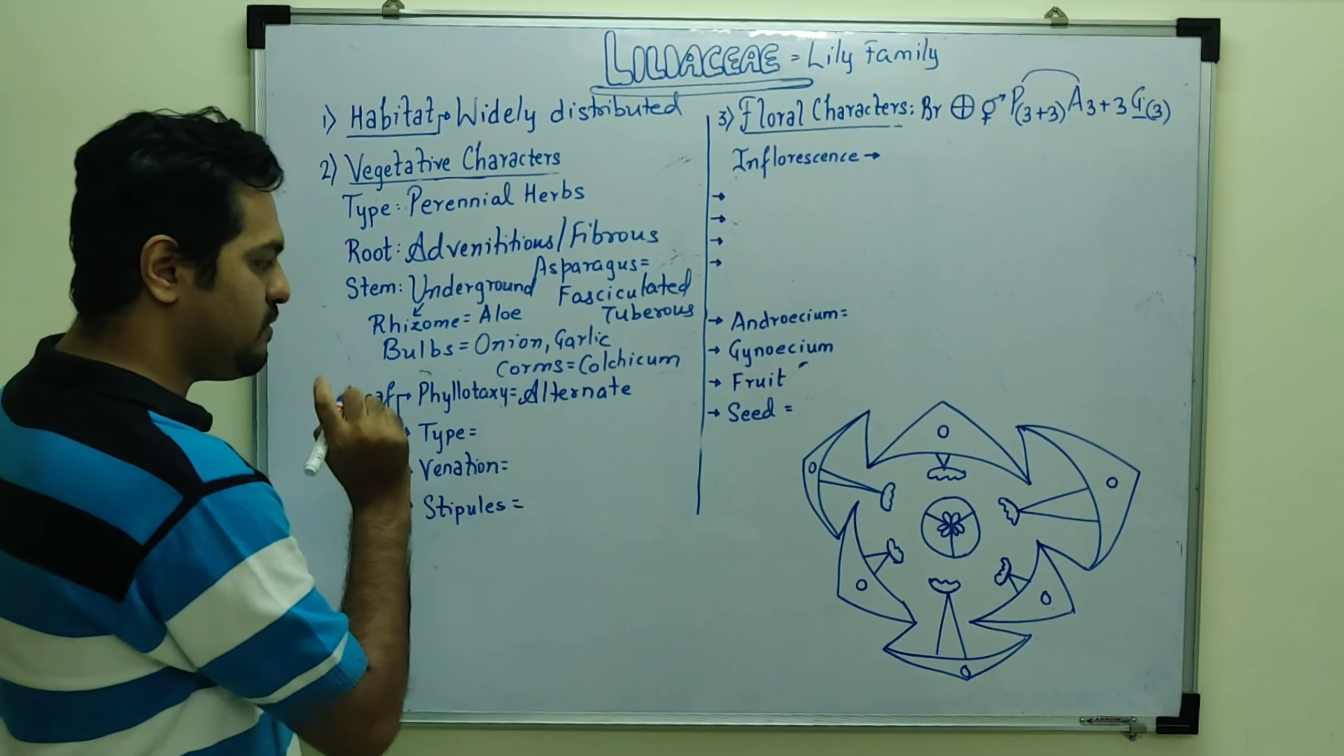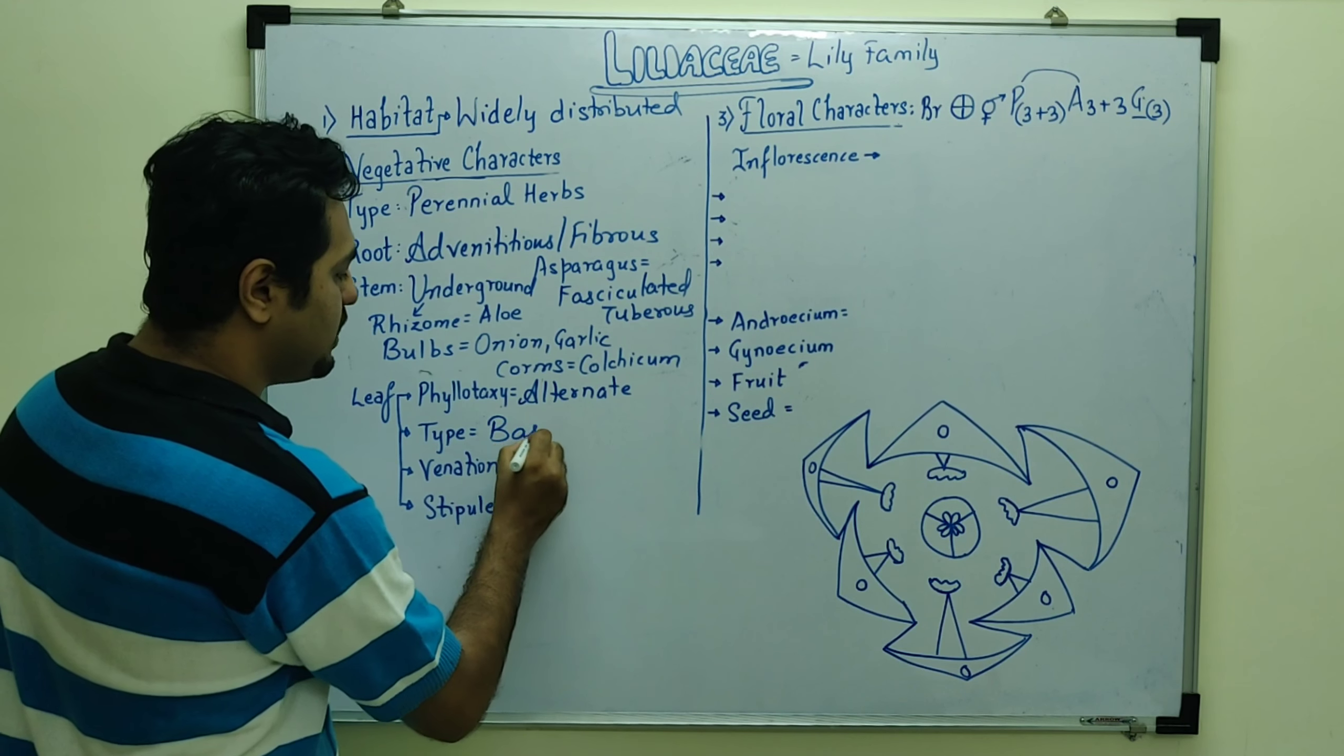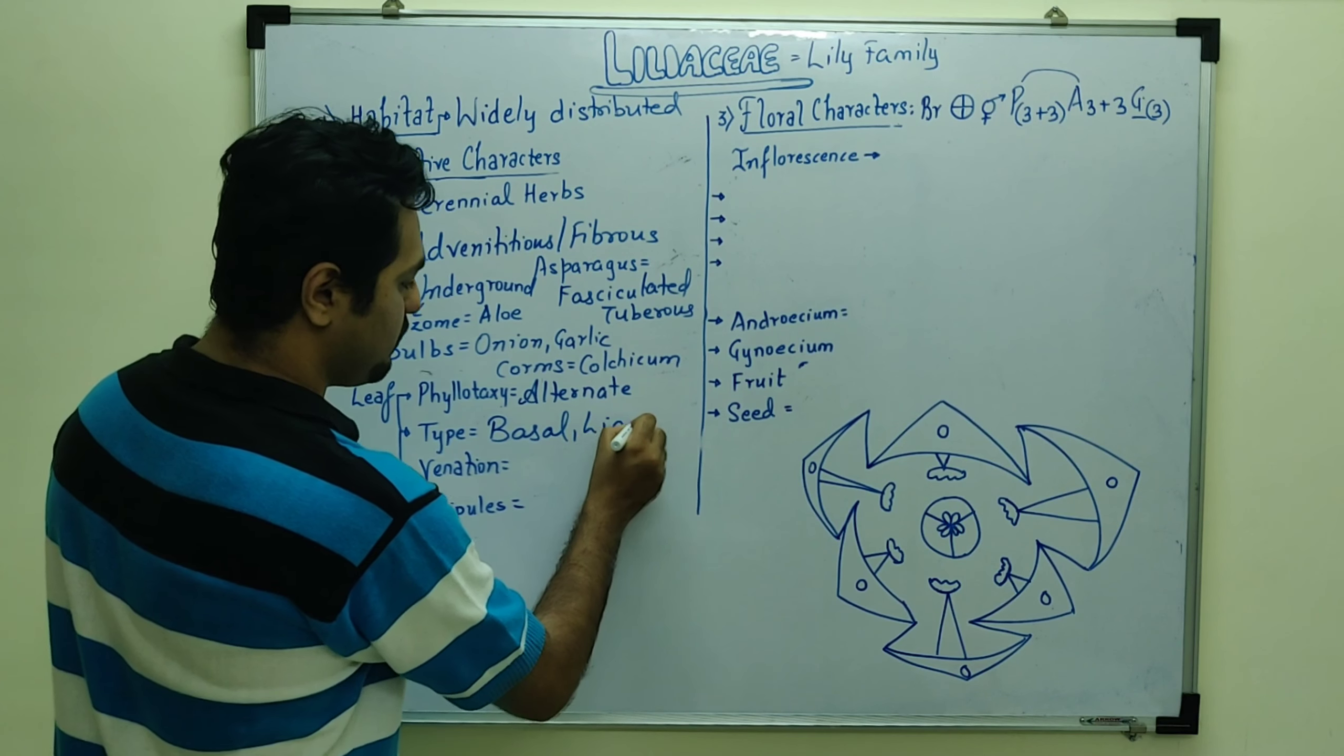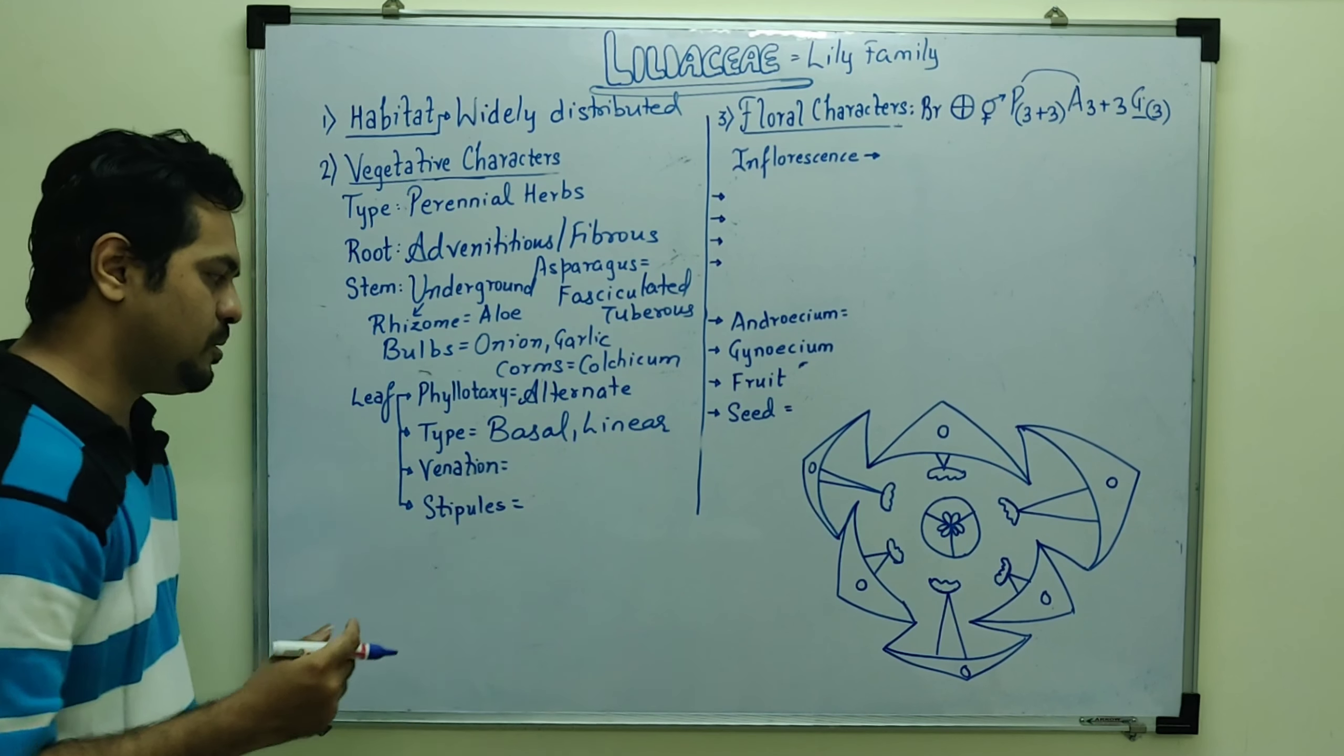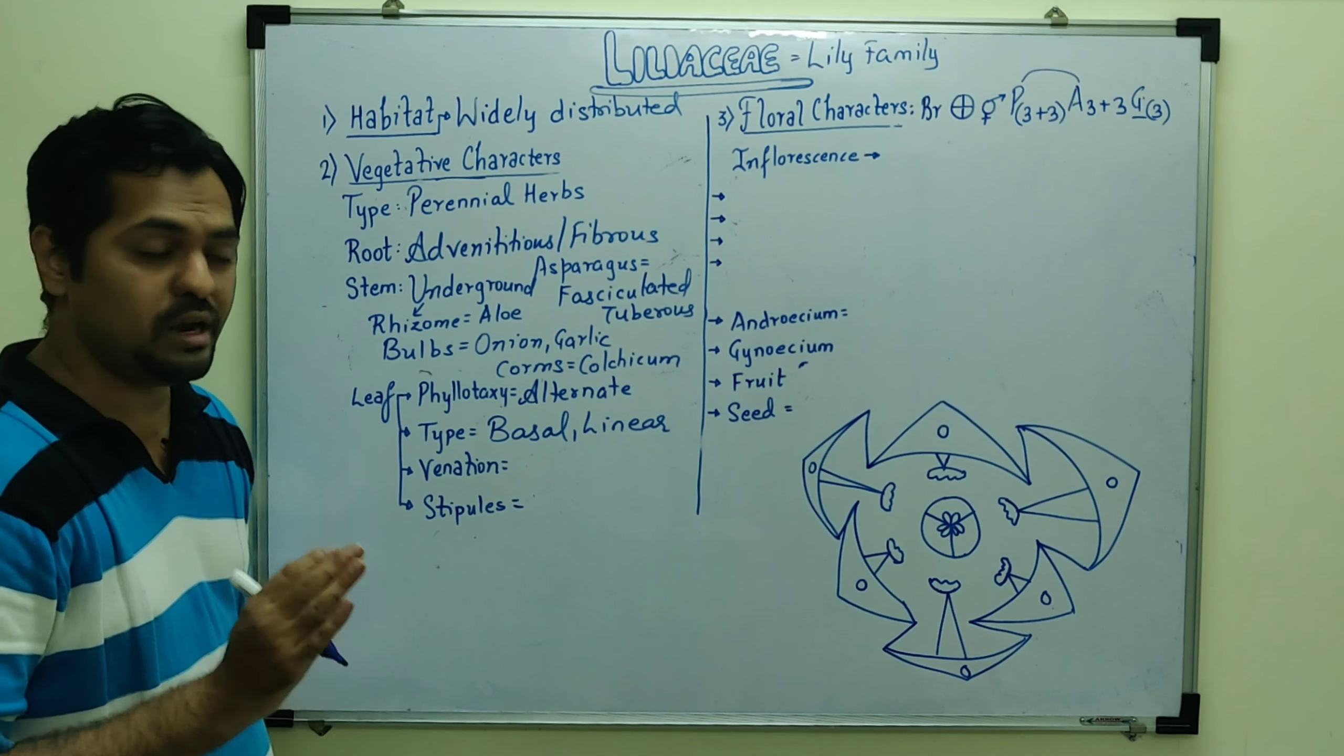Leaves, which we can see in phyllotaxy, alternate phyllotaxy. Now, in Fabaceae, Solanaceae, there was an alternate phyllotaxy. Here, type of leaf is what we call basal leaf and linear leaf. Basal and linear.